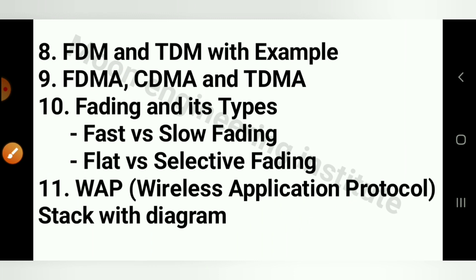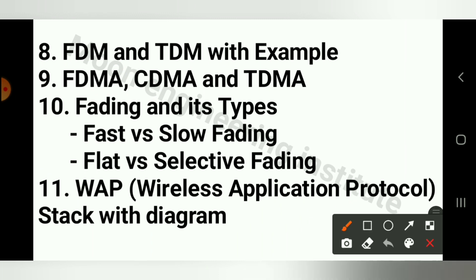Question number 8 is important: FDM and TDM with examples. FDM, CDM and TDM — multiplexing and its types, fast vs. slow, and selective types.